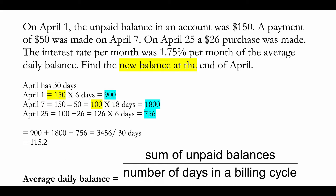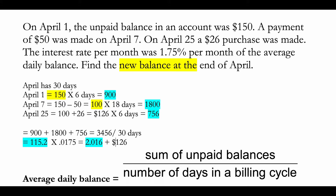Using the average daily balance of 115.2, multiply by the monthly interest rate of 1.75% (i.e., 0.0175). This gives an interest charge of approximately $2.016 for the month of April. Since your balance on April 30th was $126, your new balance equals $126 + $2.016 = $128.016.